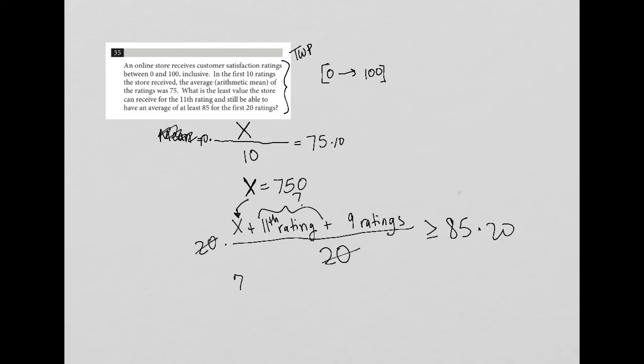Replace X with 750. So I have 750, I have my 11th rating, I have ratings 12 through 20, so I'll just say plus nine more ratings, nine R. And that's got to be greater than or equal to 1,700. So when I subtract 750 from both sides, I have whatever that 11th rating is, plus nine more ratings. And that has to be greater than or equal to 1,700 minus 750 is 950.